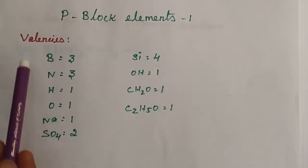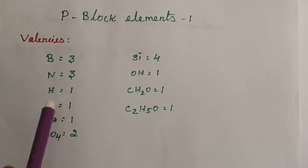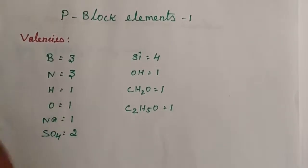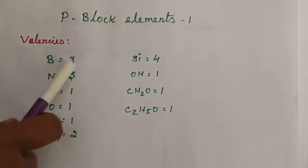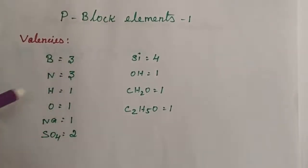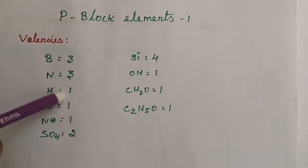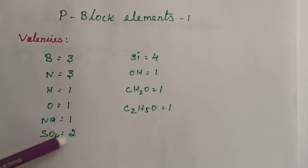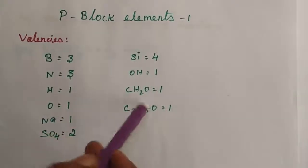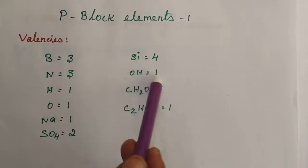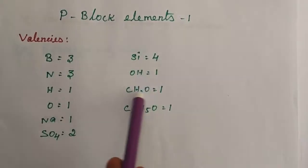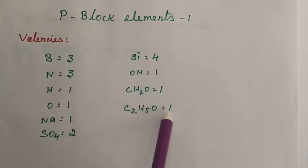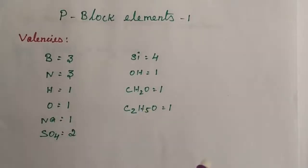Valences are available in the outer shell. Boron has valence 3, nitrogen 3, hydrogen 1, oxygen 1, sodium 1, sulfate 2, silicon 4, OH 1, CH2O 1, and C2H5O 1. Using these valences, we can determine the product of each reaction.